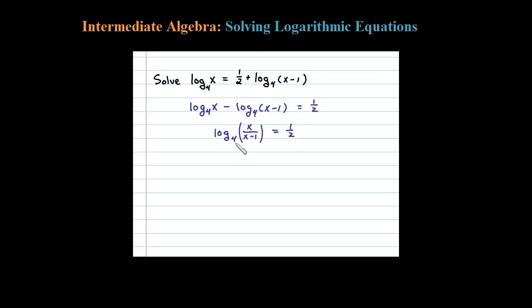Okay, so 4 to this power has to equal the argument here: x over x minus 1. What I'm left with here is a simple rational equation now.